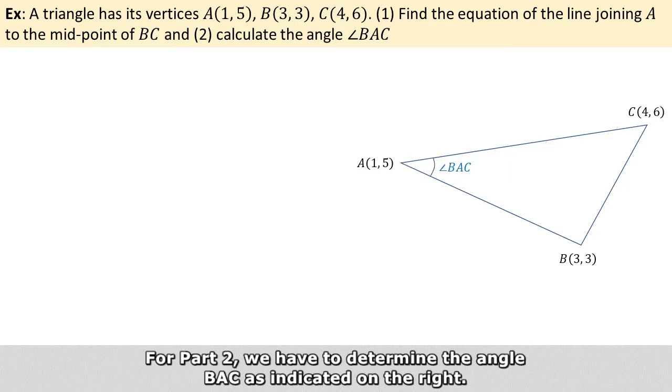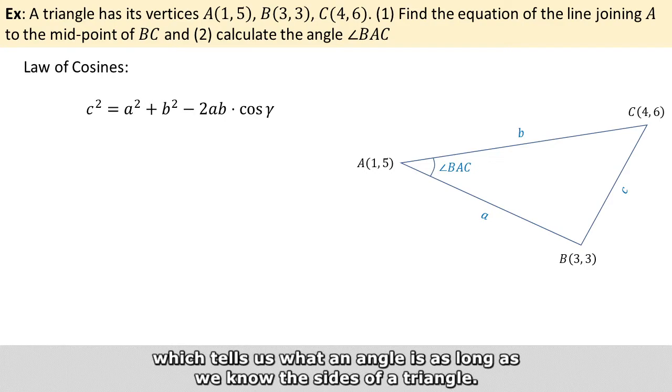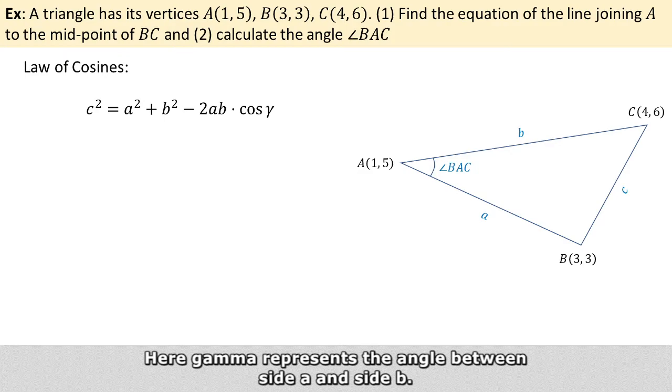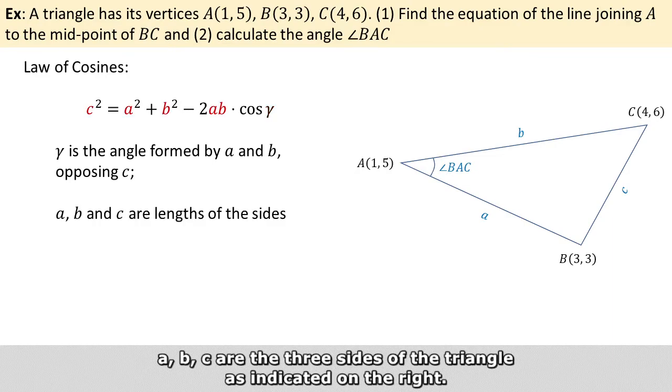For part 2, we have to determine the angle BAC, as indicated on the right. There is this very convenient thing called the law of cosines, which tells us what an angle is as long as we know the size of a triangle. Here gamma represents the angle between side A and side B. And A, B, and C are the three sides of the triangle, as indicated on the right.